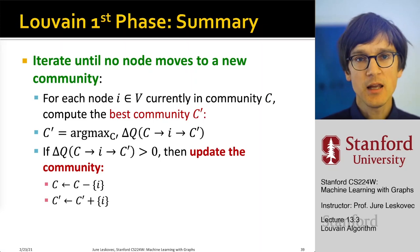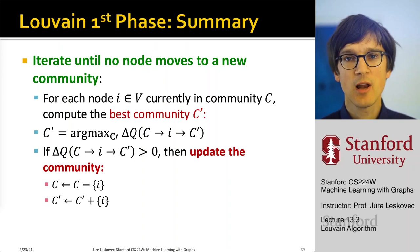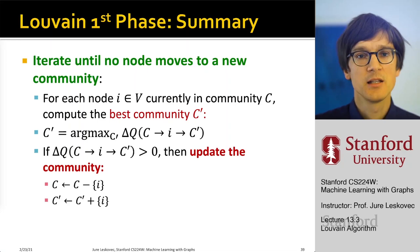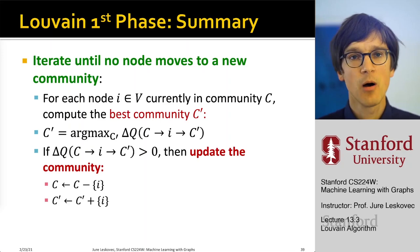Now that we know how to compute delta modularity quickly, we iterate: for every node, we check whether there is an opportunity to increase modularity by moving it to a different community. We compute delta modularity and greedily move the node into the community c-prime that maximally increases overall modularity. This is essentially how the first phase of the Louvain algorithm operates.